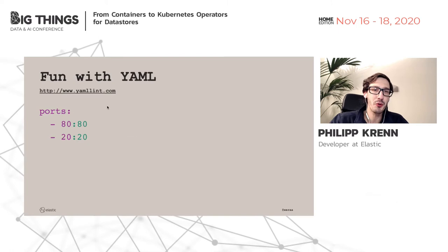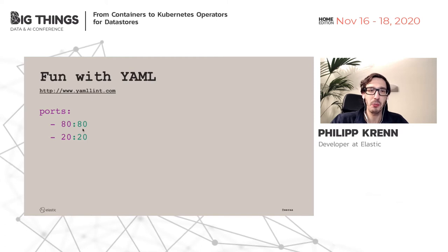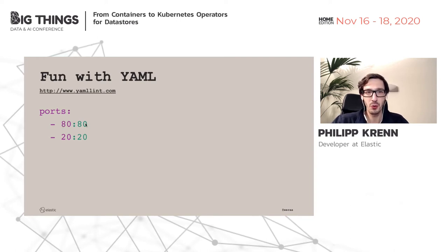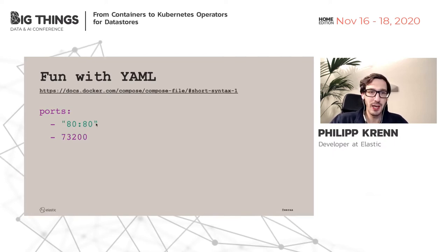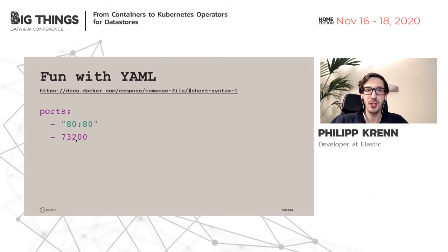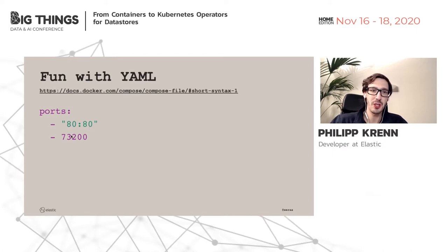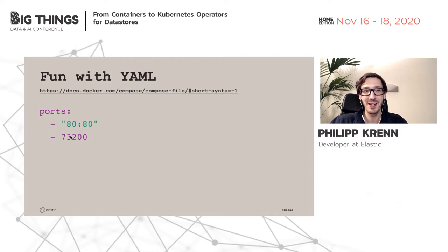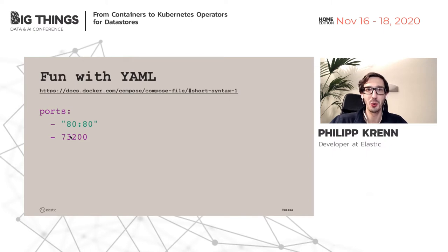With lots of YAML, you get interesting problems. For example, if you try to use a port mapping in Docker and run it through a linter, something unexpected will happen. This is actually from the Docker docs. If you map port 80 to 80, and port 20 to 20 — the 80:80 mapping is fine, but the 20:20 mapping is weird. YAML has a feature where if you have a colon and the value is lower than 60, it treats it as base 60. So 20:20 becomes 20 base 20 rather than base 10. The solution is to quote it.